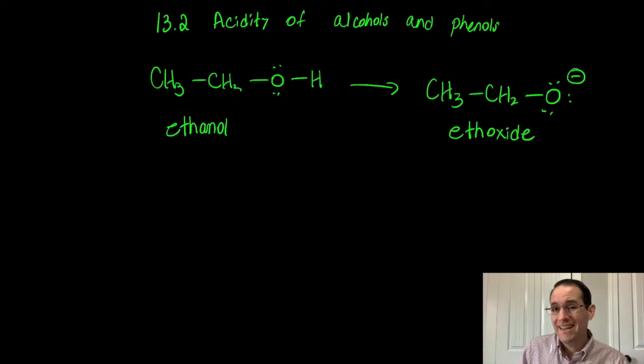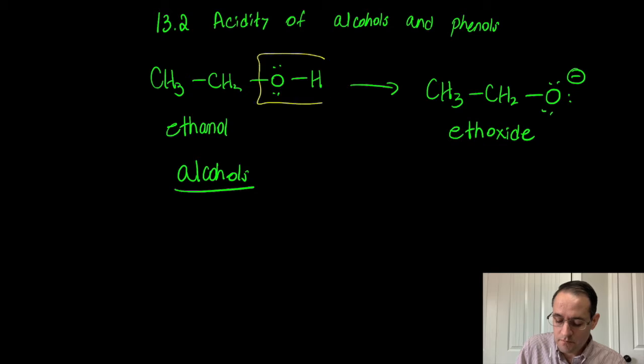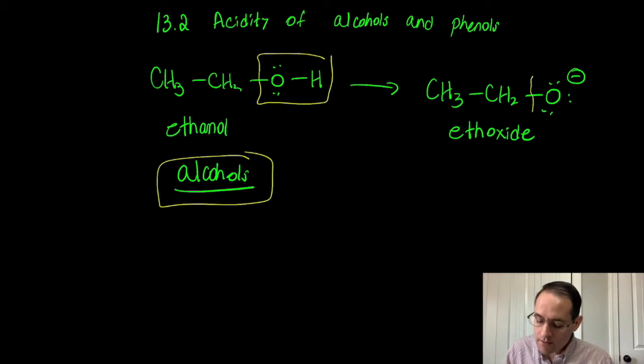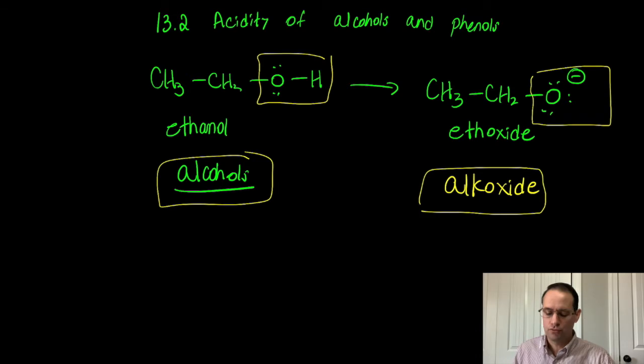So alcohols have the hydroxyl group intact. Alkoxides look just like alcohols, but they're missing that hydrogen. And we call that an alkoxide. It's spelled with a K. It's a weird word. So that's an alkoxide functional group.